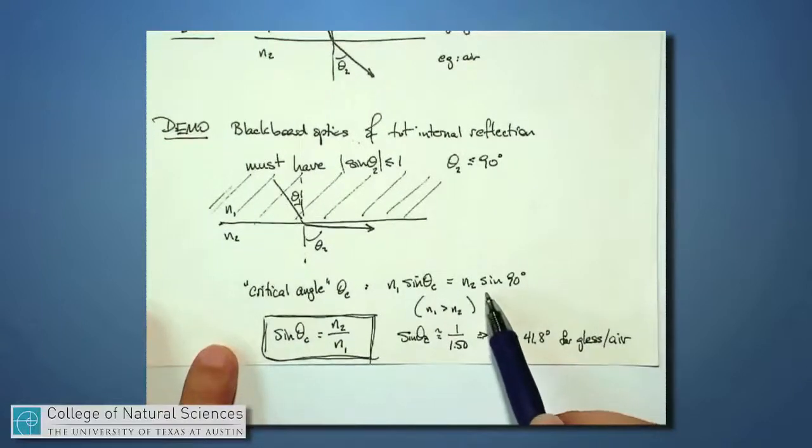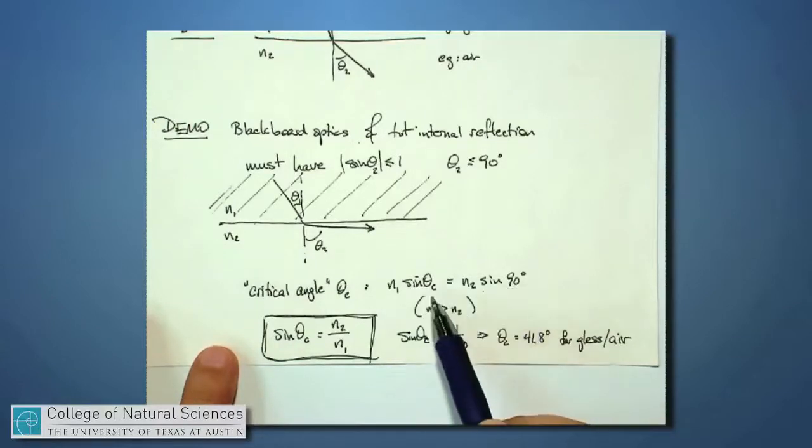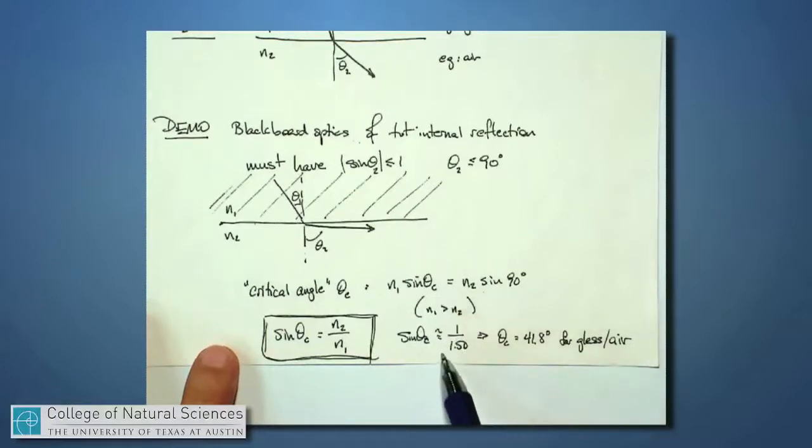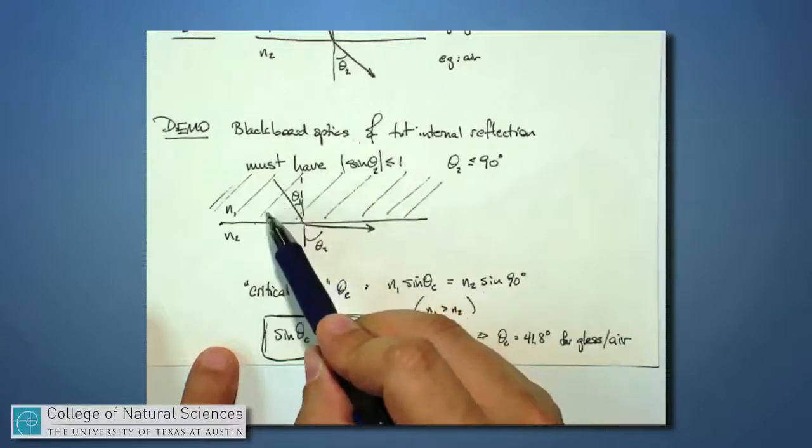And if I put in the maximum possible value here, the sine of 90 degrees, then I find that there's a certain angle which is sometimes called the critical angle. And that's derived as the sine of that critical angle is the ratio of these two indexes of refraction, the one I'm going into divided by the one I'm coming from. And if that happens, if I'm shooting light at that critical angle or even beyond,